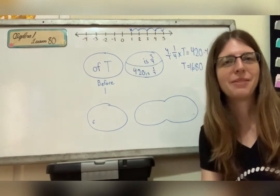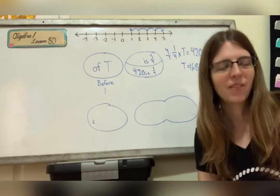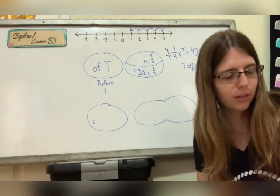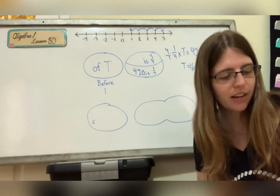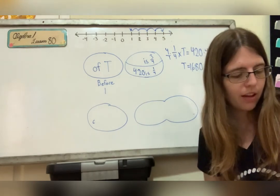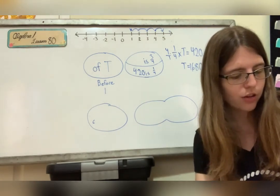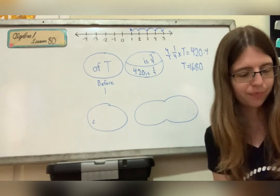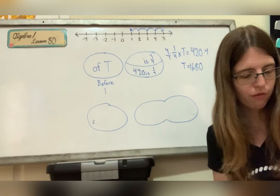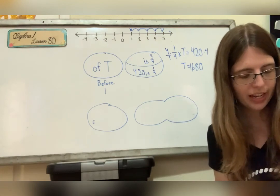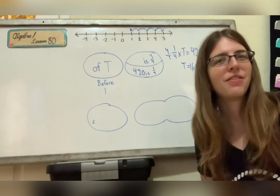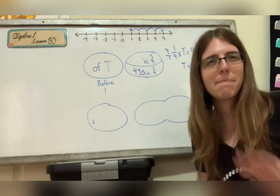All right, I want you to pause now and do your practice. Okay, letter A, you should have gotten as your three consecutive integers: negative 16, negative 14, and negative 12. Letter B, you should have gotten 216 yards. And letter C, you should have gotten 4480 tickets. Okay, let me know if you have any questions, but that's it for now. See you in our next lesson. Bye.